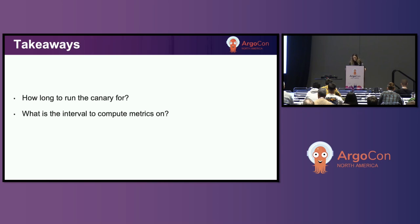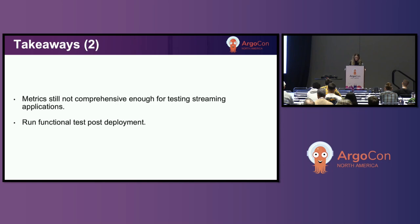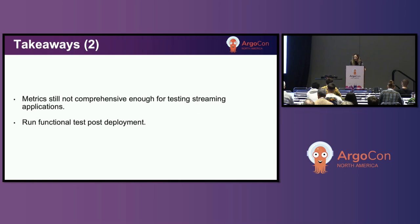Another takeaway is about the interval used to compute metrics, because we need to be aware of consumer group rebalances, which happen every time we add new canary pods. Time windows as short as one minute might not be enough because you still need to wait for the rebalance to finish and for metrics to be collected. Also, although metrics help reduce impact when rolling out a new application, they are not comprehensive enough to test the entire functionality of a deployment — they are not a replacement for tests. That's actually a second reason to fail fast and run the canary for a short time, because we still have component tests and full system tests running post-deployment.